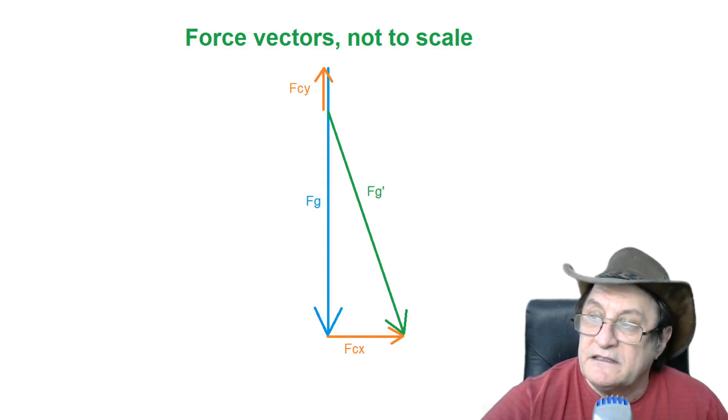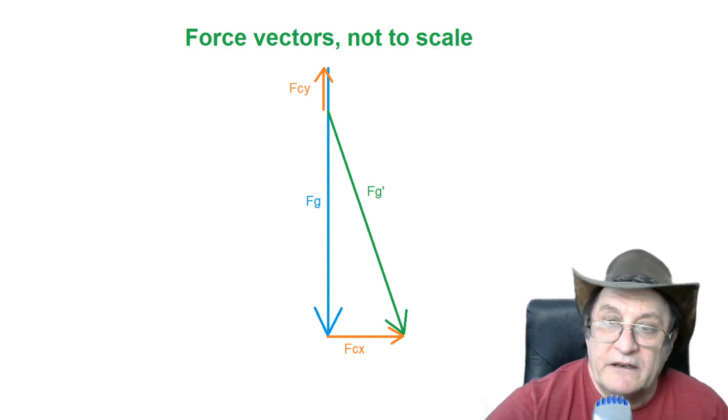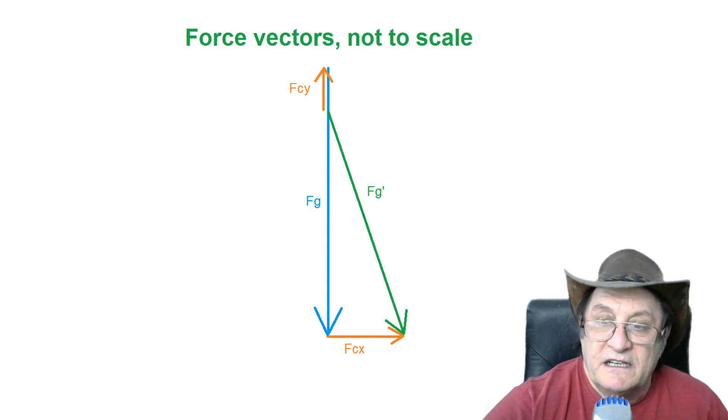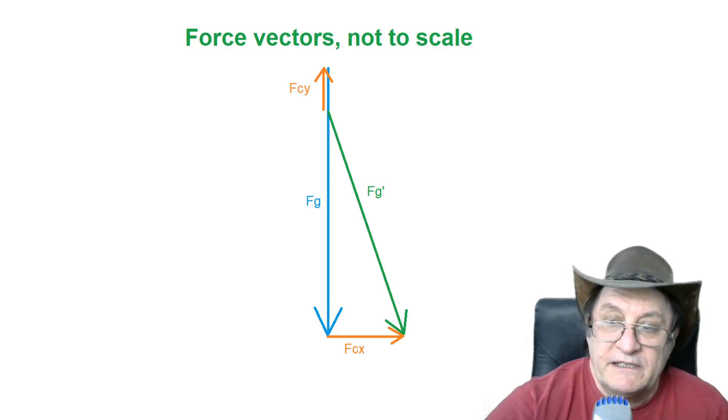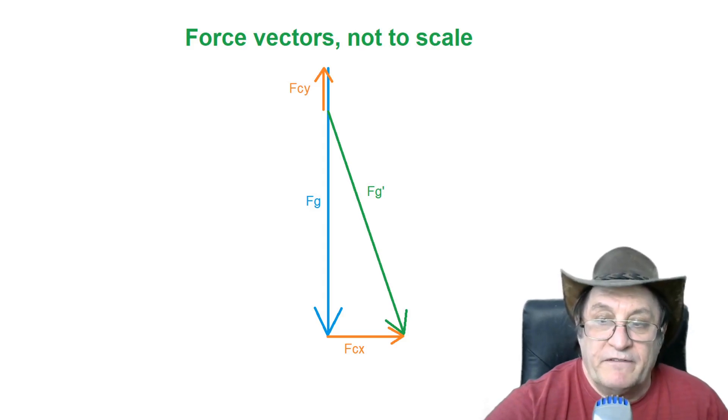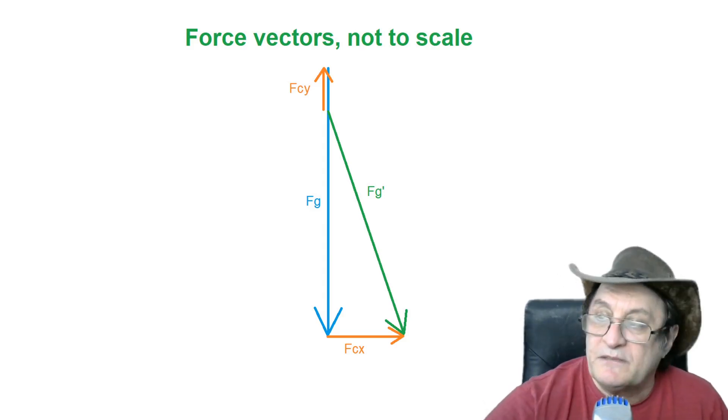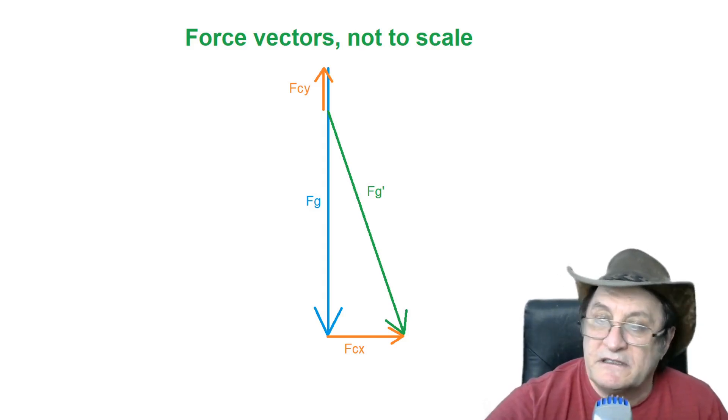Now this diagram is not to scale. The actual angle of FG' to FG is going to be 0.1 degrees thereabout, so it's going to be very, very small. And despite all the protestations of the flat earthers, you're not really going to notice this very small amount.